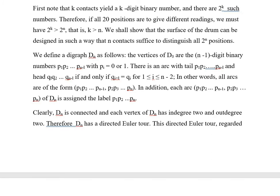We define a digraph D_n as follows: the vertices of D_n are the (n-1)-digit binary numbers p_1 p_2 ... p_{n-1}, with p_i = 0 or 1. There is an arc with tail p_1 p_2 ... p_{n-1} and head q_1 q_2 ... q_{n-1} if and only if q_i = p_{i+1} for 1 ≤ i ≤ n-2. In other words, all arcs are of the form